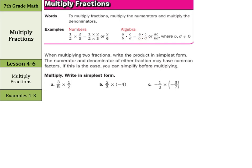When multiplying two fractions, write the product in simplest form. The numerator and denominator of either fraction may have common factors — in this case, you can simplify before multiplying, and that's something I strongly recommend. In our first example, three-fifths times one-half: look at the three and the two — no common factors — or the five and the one — no. So simply multiply across: three times one is three, five times two is ten, and our answer is three-tenths.